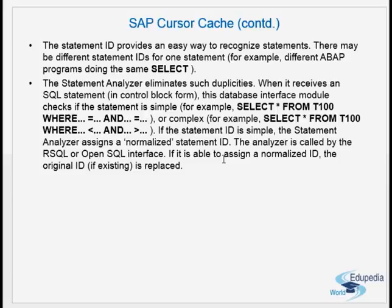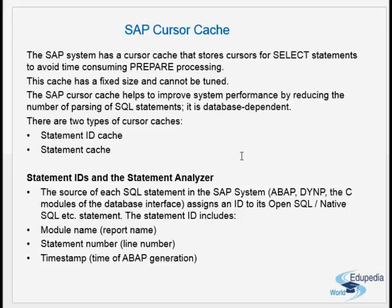The statement analyzer eliminates duplicates. When it receives an SQL statement, this database interface module checks if the statement is simple or complex. If the statement is simple, it assigns a normalized statement ID. This analyzer is called by the RSQL or the open SQL interface, and if it is able to assign a normalized ID, the original ID is replaced. So the statement analyzer eliminates duplicates that arise when one statement is used in different ABAP programs or generated at different times.